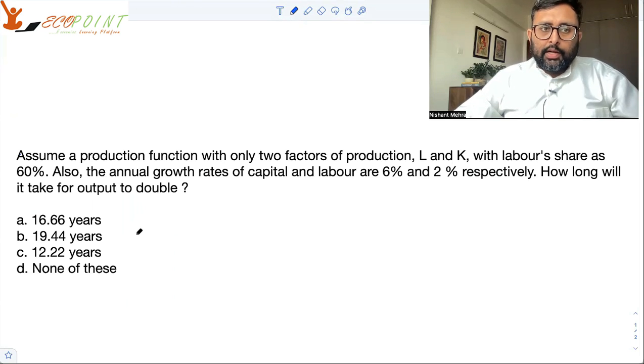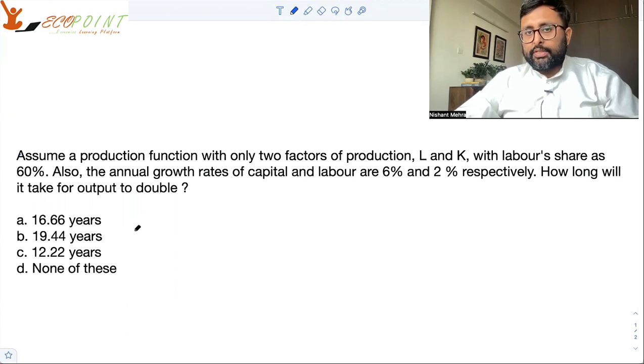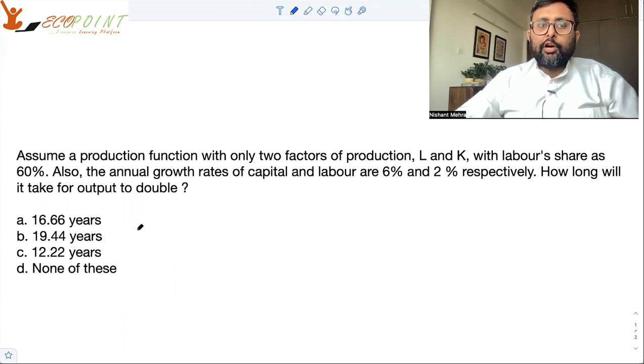Let us have a look at this question. Assume a production function with only two factors of production, labor and capital. Labor's share is given to you, 60%. So naturally, capital's share is going to be 40%. Also, the annual growth rates of capital and labor are given to you, 6% and 2%. How long will it take for the output to double?